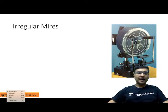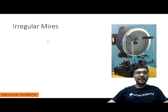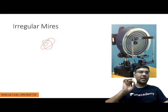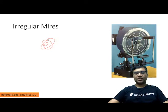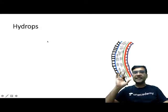When you get keratoconus, you get irregular mires. It can be one mire like this, one mire like this, and other mires can be like this. So these are irregular mires that you see in keratoconus.